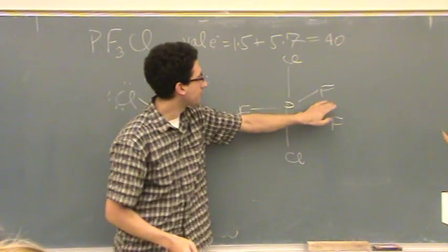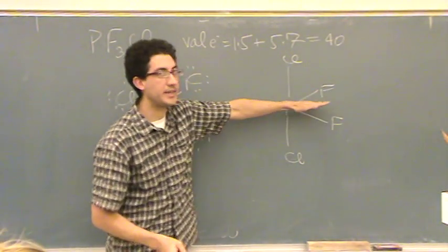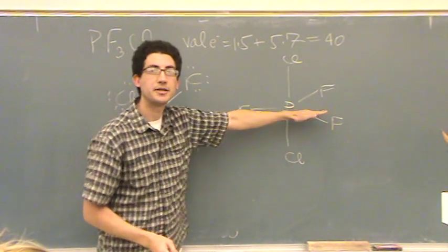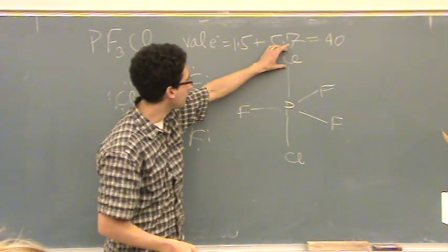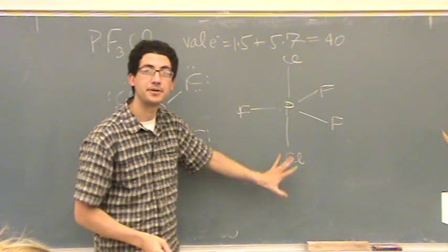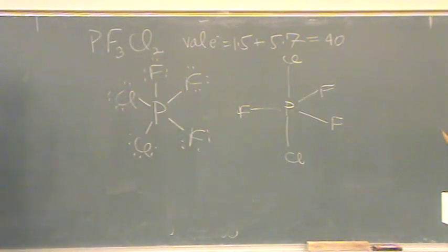Yeah. So, these three fluorines are in the plane. They're kind of coming in and out of the board. And these, the chlorines are in the plane of the board. Any other questions?